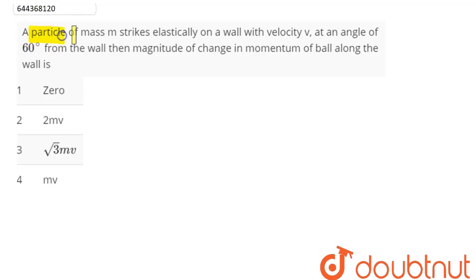Question is: a particle of mass M strikes elastically on a wall with velocity V at an angle of 60 degrees from the wall. Then magnitude of change in momentum of ball along the wall is.